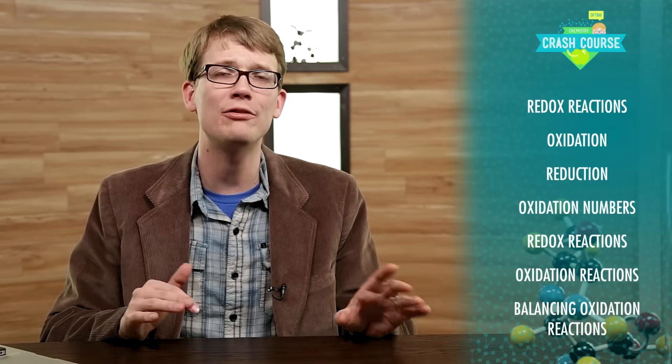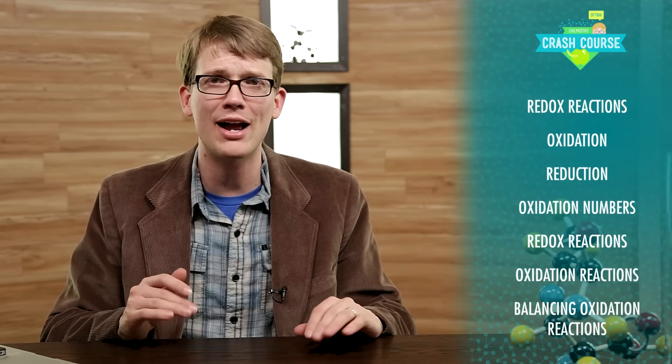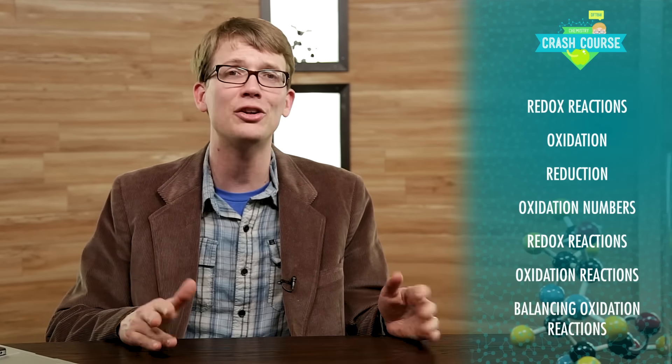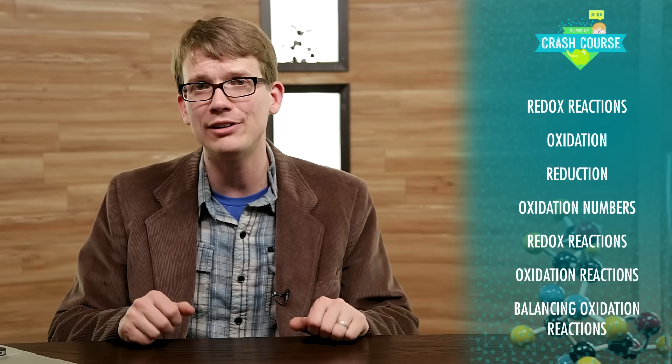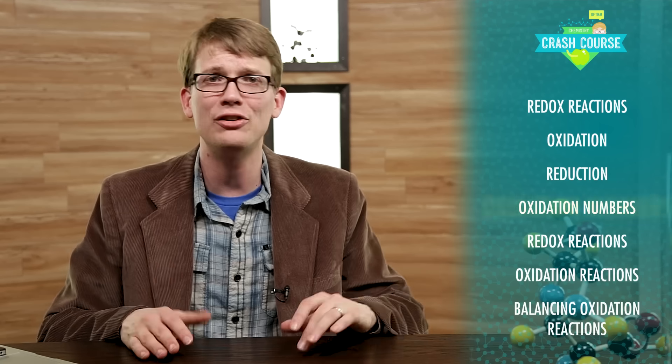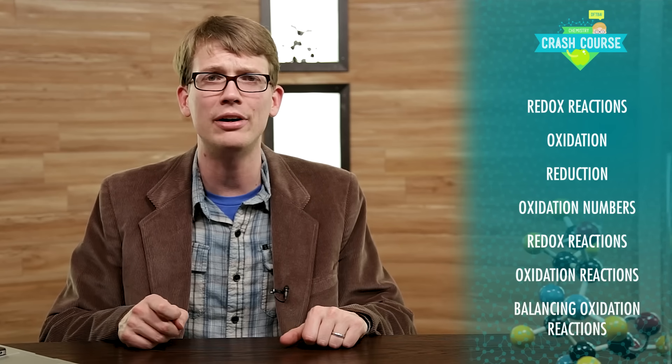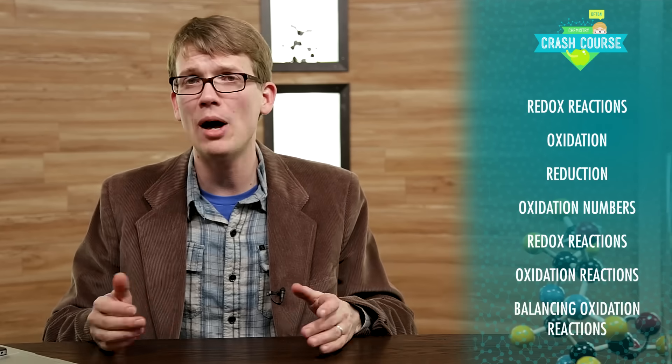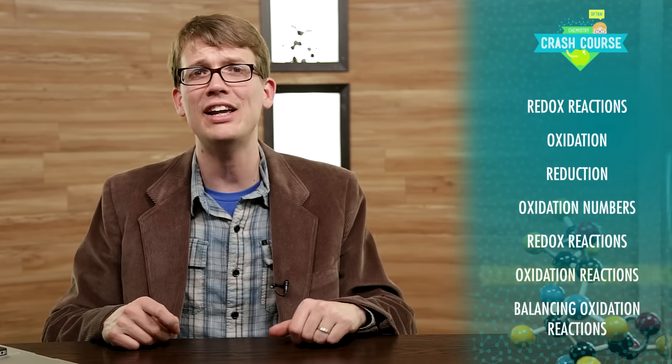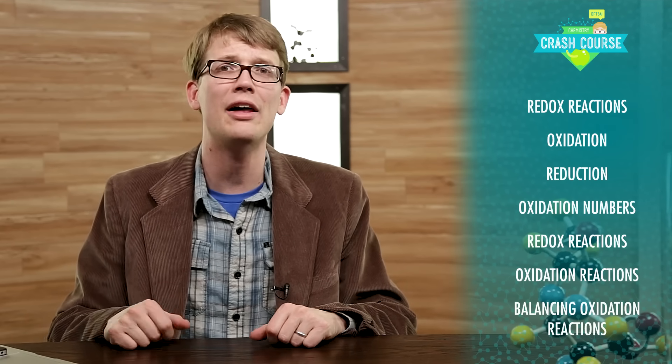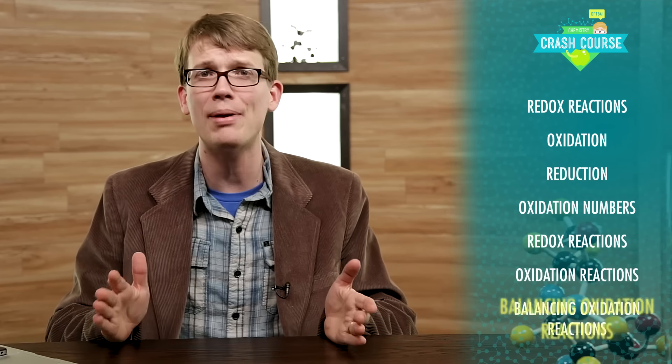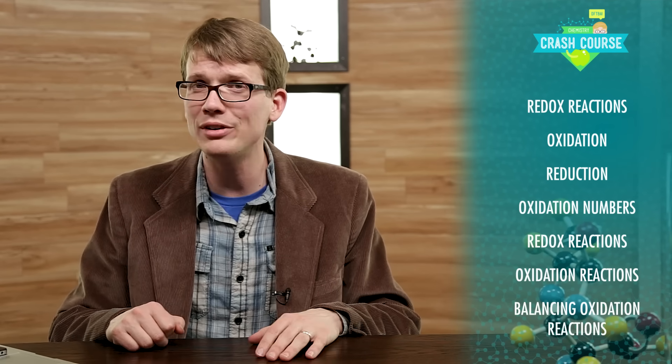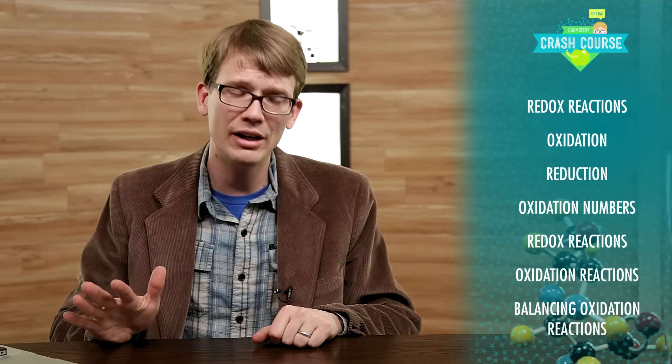Thank you for watching this episode of Crash Course Chemistry! If you were paying attention, you learned that any reaction where electrons move around from atom to atom is a redox reaction, that oxidation is the loss of electrons, and that reduction is the gain of electrons, and that oxidation numbers are assigned to atoms to take part in reactions in order to keep track of what their electrons are up to. You also learned a few simple tricks to help figure out what an atom's oxidation state is, and you got a little practice figuring out how to assign oxidation states and balance oxidation reactions, with two examples, one pretty simple, and another a little less so.